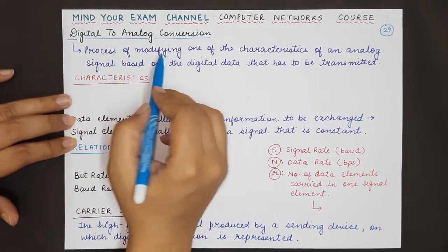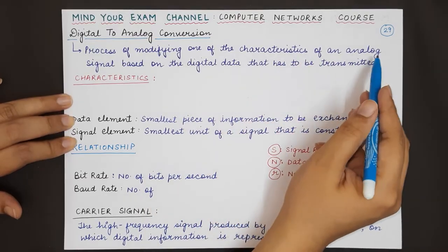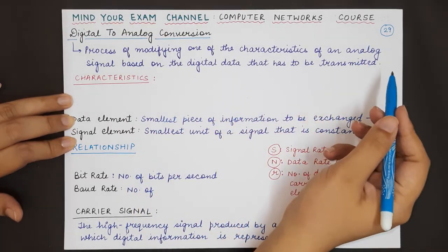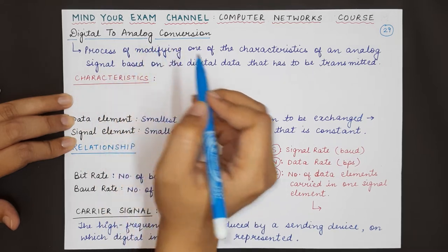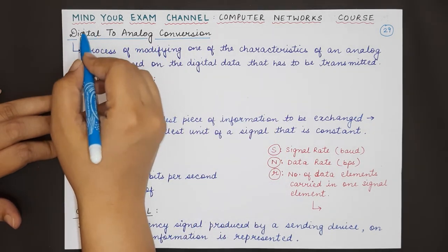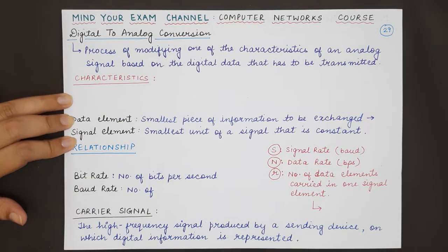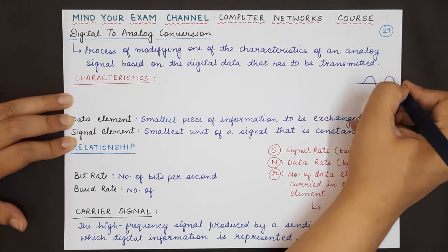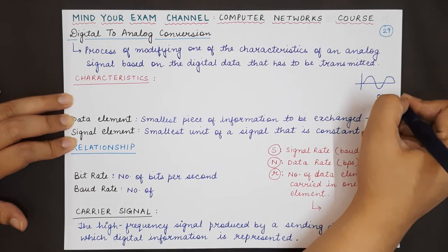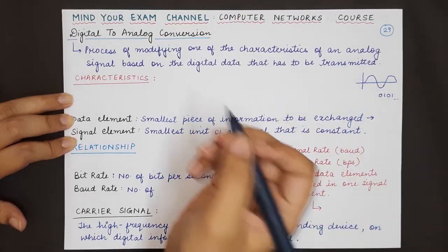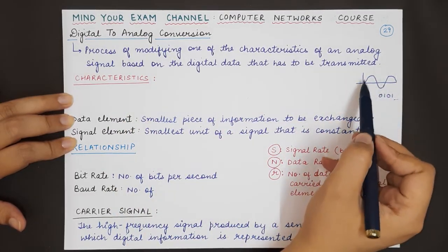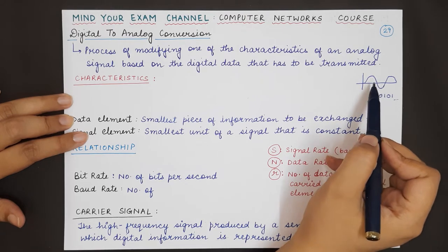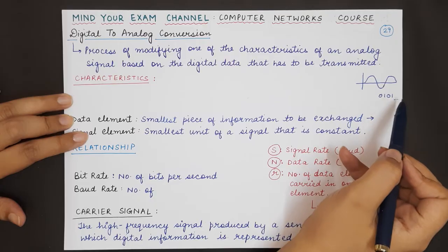Digital to analog is the process of changing one of the characteristics of an analog signal — that is, a sine wave — based on the digital information that you want to transmit. So digital to analog conversion basically means you have to send digital data, but for sending it you have an analog signal, a continuous sine wave, while the data you want to send is in the form of bits — zeros, ones, and their combinations.